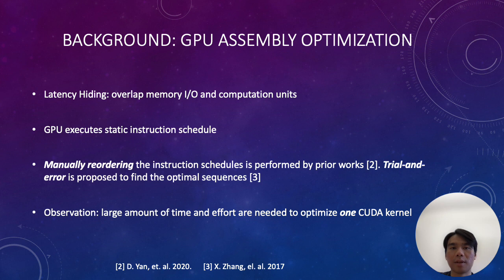The key to GPU assembly optimization is latency hiding. Latency hiding aims to keep both the memory units and the compute units busy, so that there is no stall during the execution pipeline. While the GPU itself has some mechanism to hide latency — for example, the warp scheduler can switch the currently executing warp when there is a stall — prior work shows that by manually reordering some memory instructions and compute instructions, the memory I/O and computation can be better overlapped, thus improving throughput.